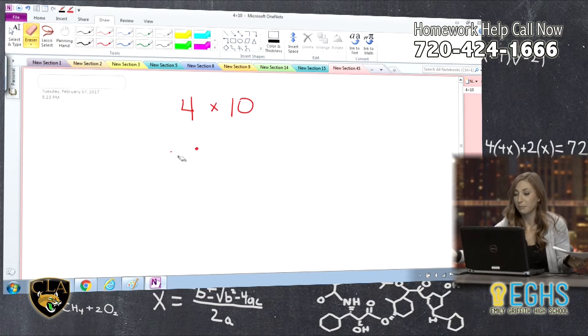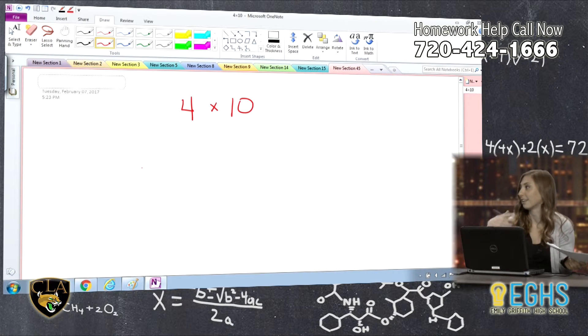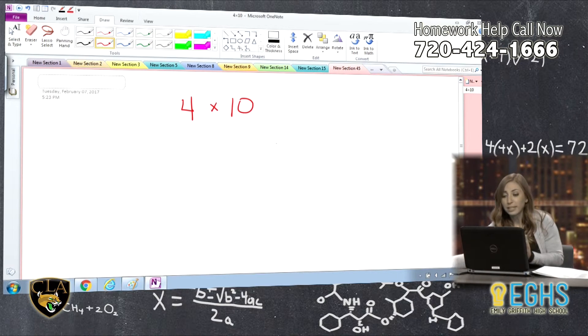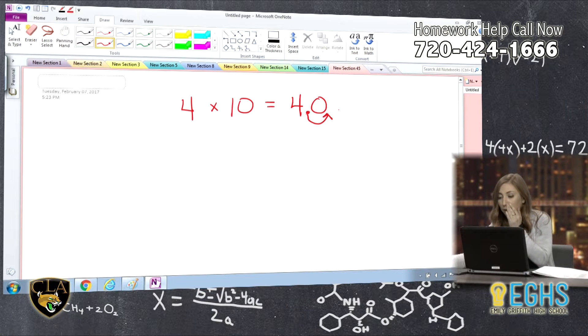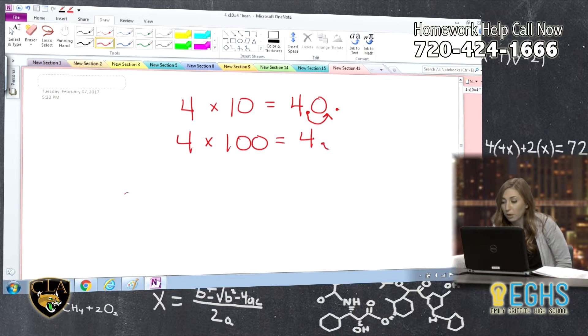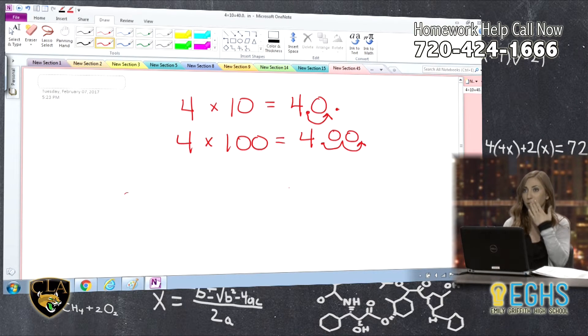A lot of times I hear students repeat that to me, like, oh, my teacher just said to add a 0. What's really happening when you're multiplying by 10 is you are moving your decimal point, your place value over one point is what's really happening. If you're multiplying by 100, you're moving your decimal point over 2. And that's why those zeros are being added.